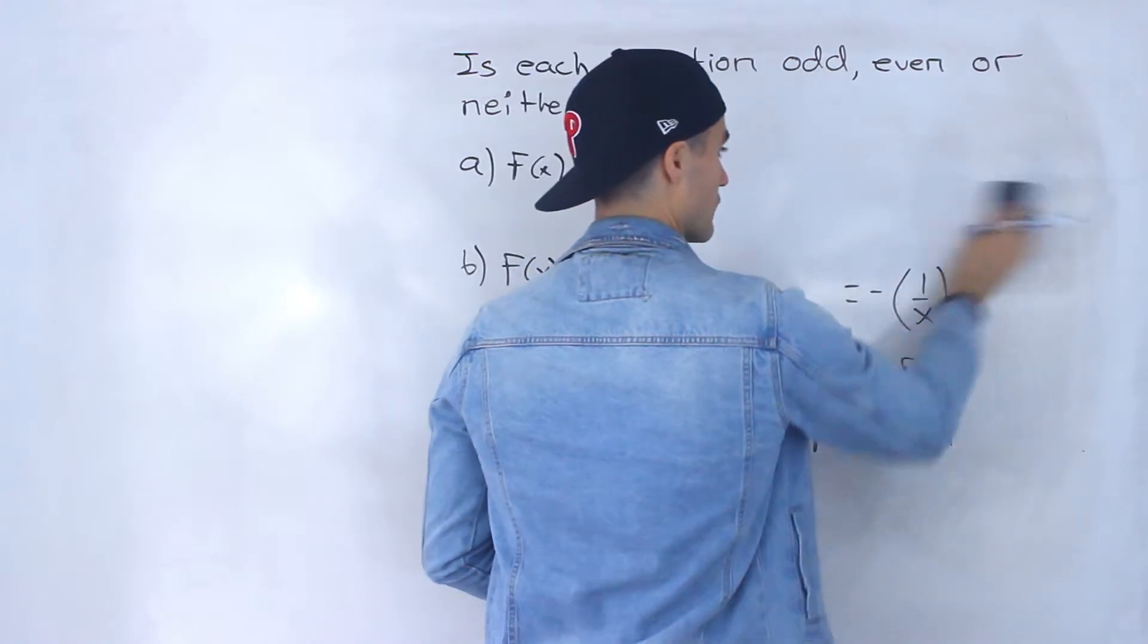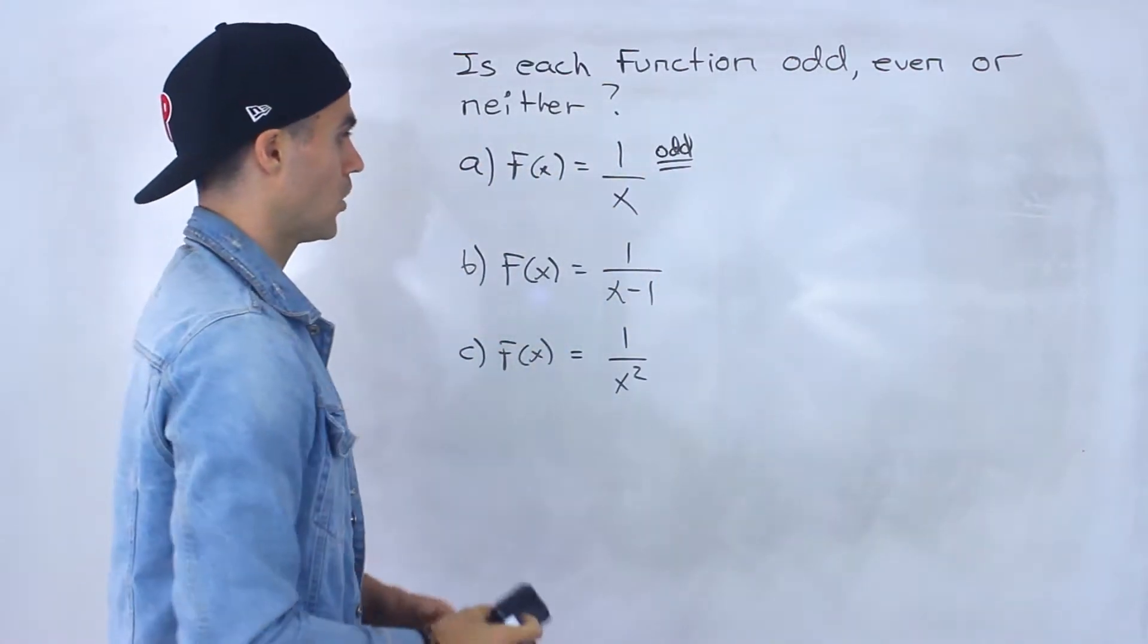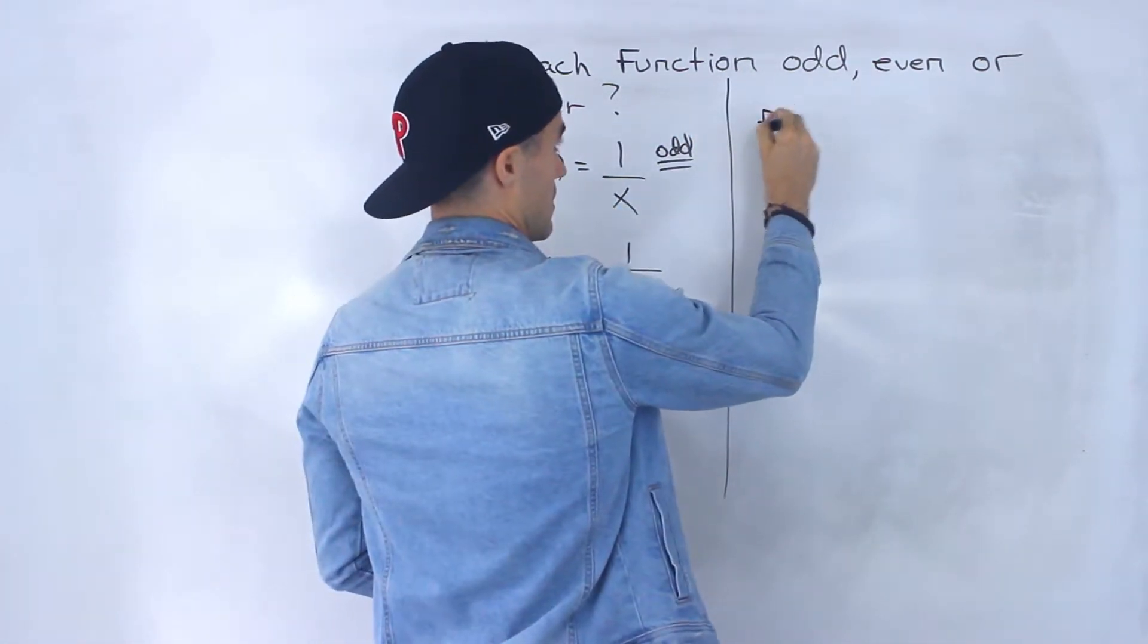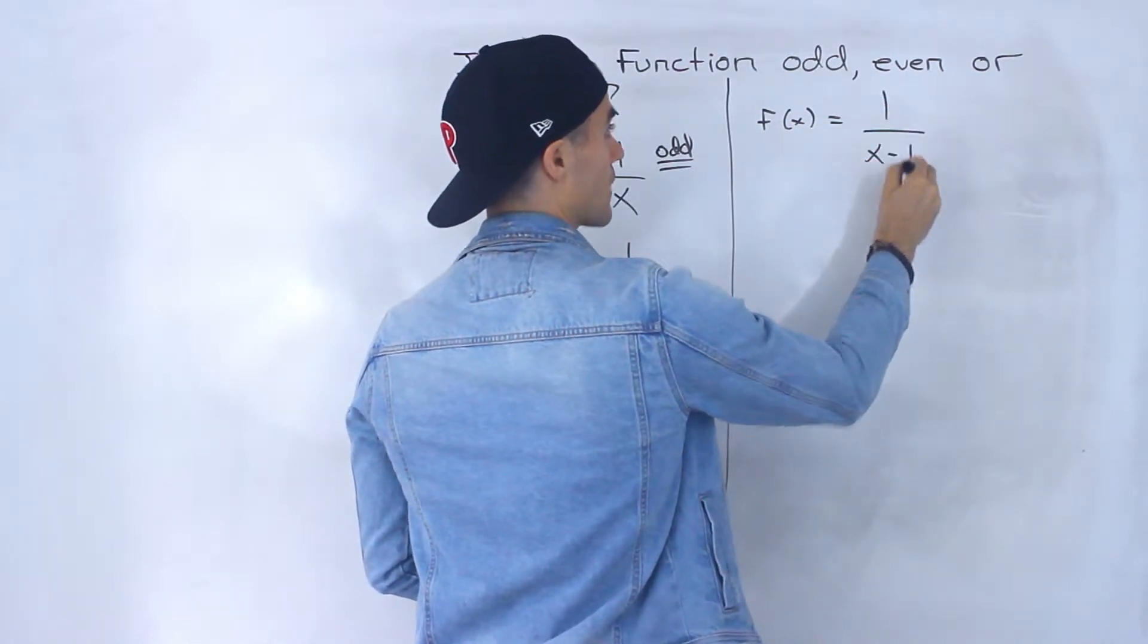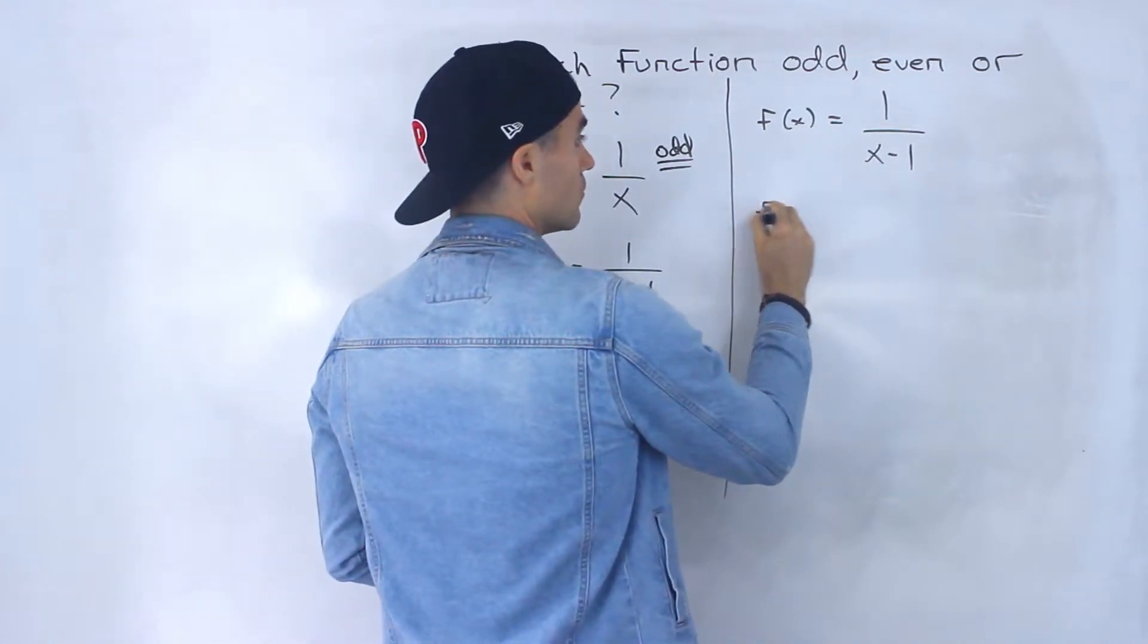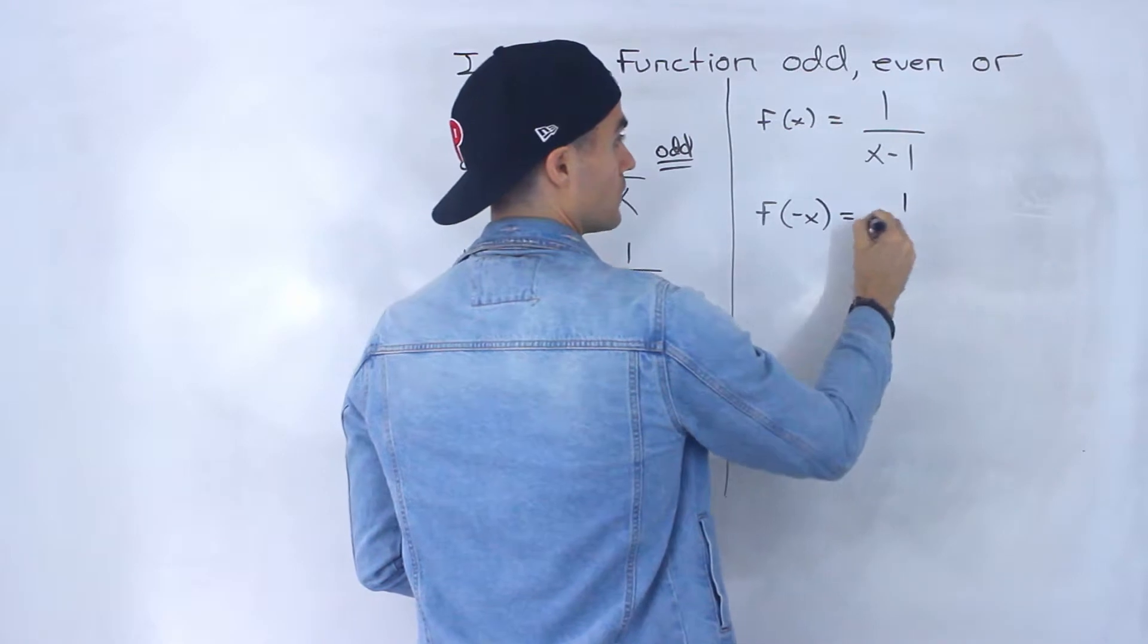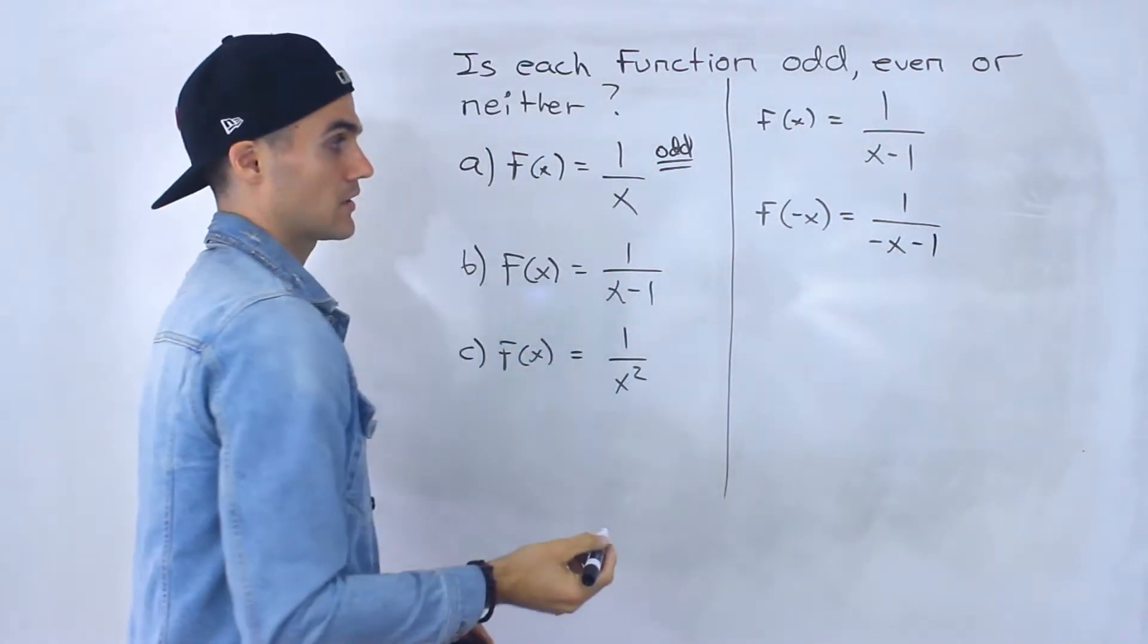Now, what about f of x equals 1 over x minus 1? So let's write this over here. Let's first show it algebraically, and then I'll show you the graph as well. So what we got to do, figure out what's f of negative x going to be. Well, we would just plug in negative x for the x value, and we'd have a minus 1 out here.